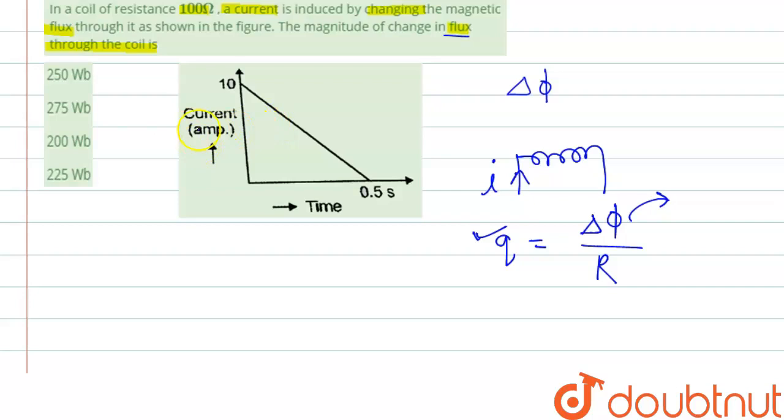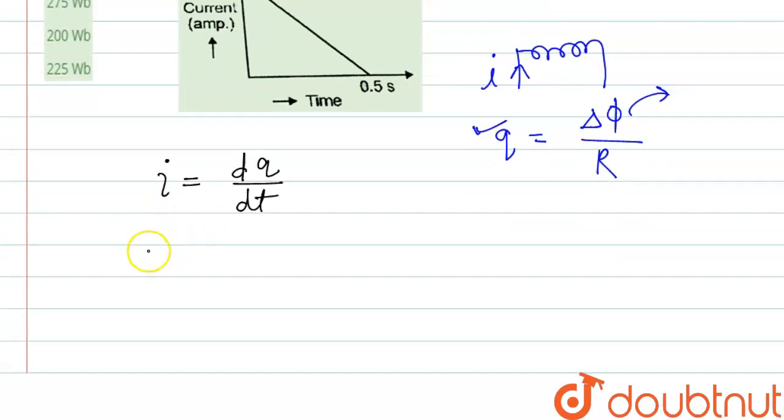Now if we see the graph, it is given current versus time. So for that, we can write for i, what is i? i is change in the charge with respect to time. So we can write i dt equal to dq, or we can write dq equal to i dt.